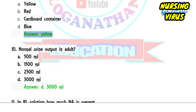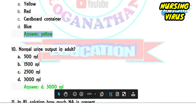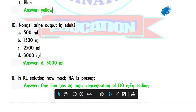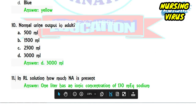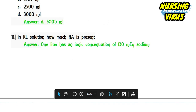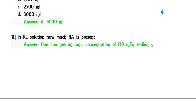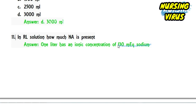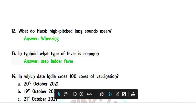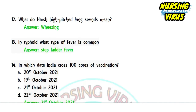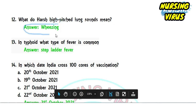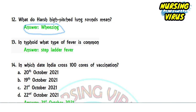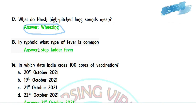Question 10: normal urine output in adults — 500 ml, 1500 ml, 2500 ml, or 3000 ml? The correct answer is 3000 ml. Question 11: how much sodium is present in one liter of oral solution? Approximately 130 mEq of sodium is present. Question 12: what does a harsh, high-pitched lung sound indicate? It commonly indicates wheezing, heard in asthmatic patients on auscultation.